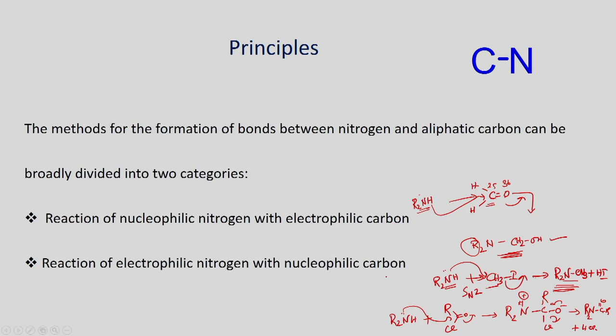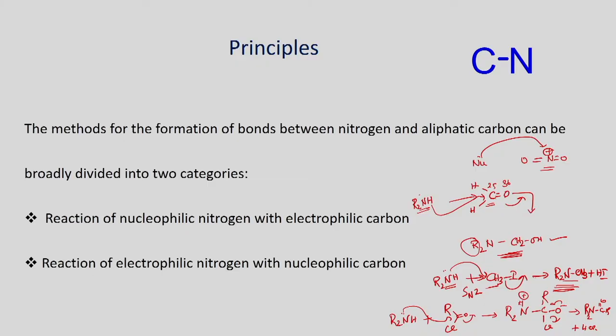On the other hand, if the nitrogen is electrophilic, it can undergo reaction with nucleophilic carbon. The principles of carbon-nitrogen bond formation are: if nitrogen is nucleophilic, it can undergo reaction with electrophilic carbon to make a C-N bond; alternatively, if you have electrophilic nitrogen, you can react with nucleophilic carbon to make a carbon-nitrogen bond.